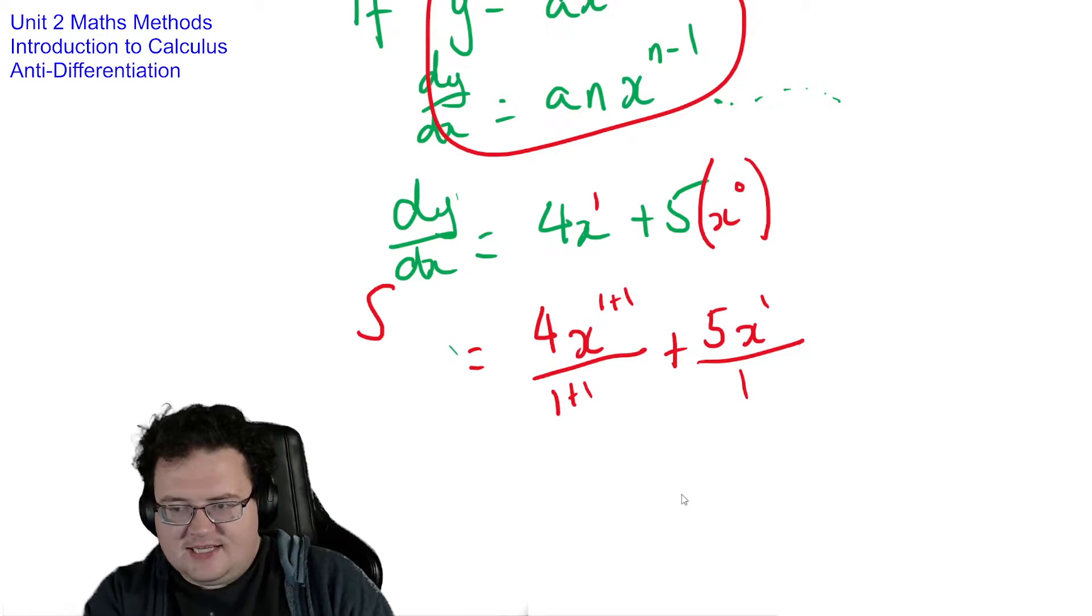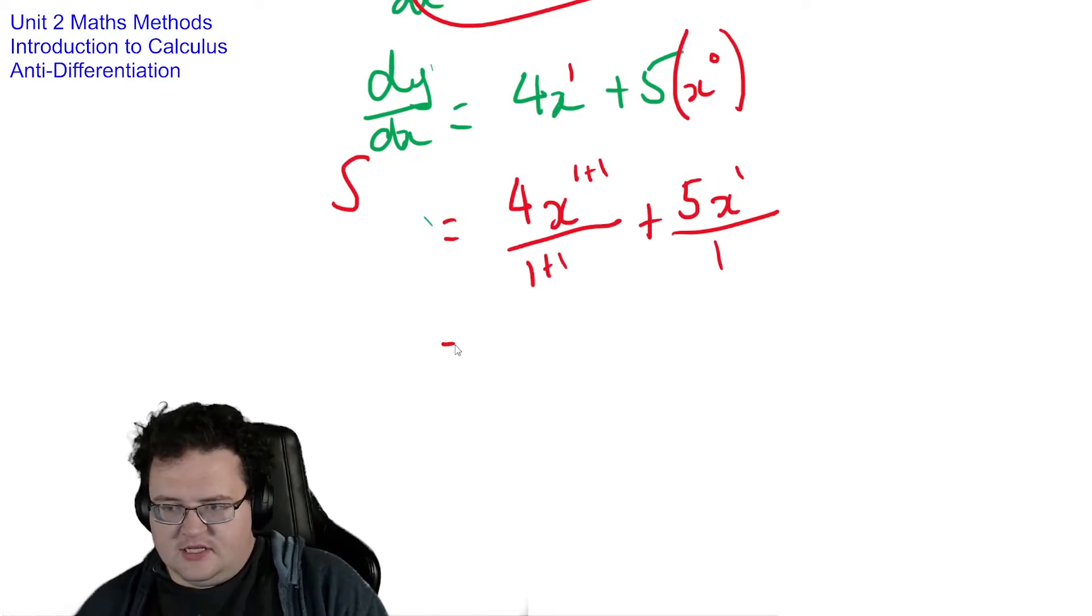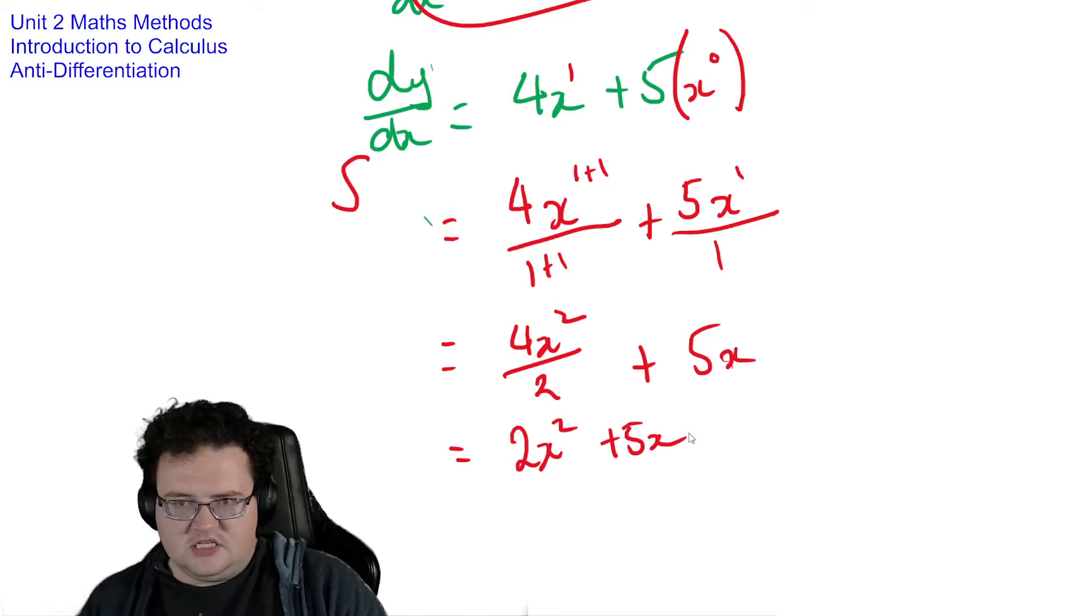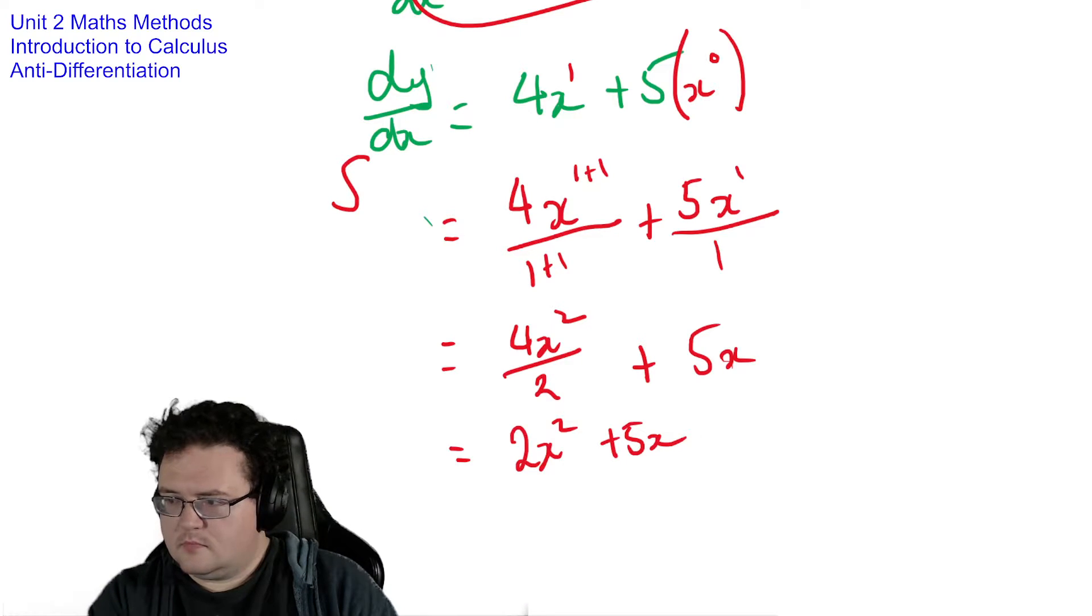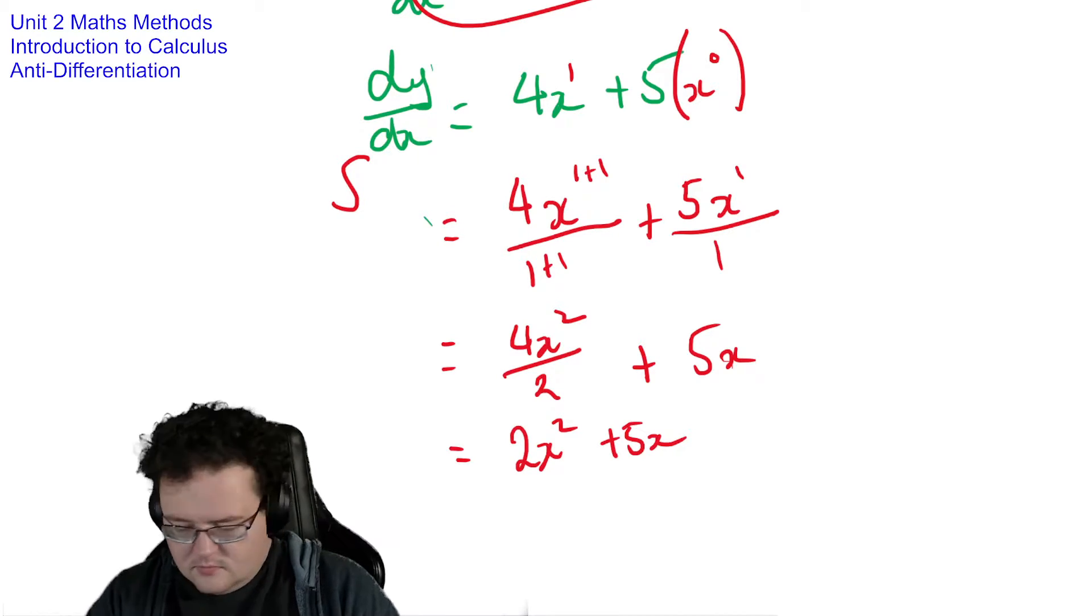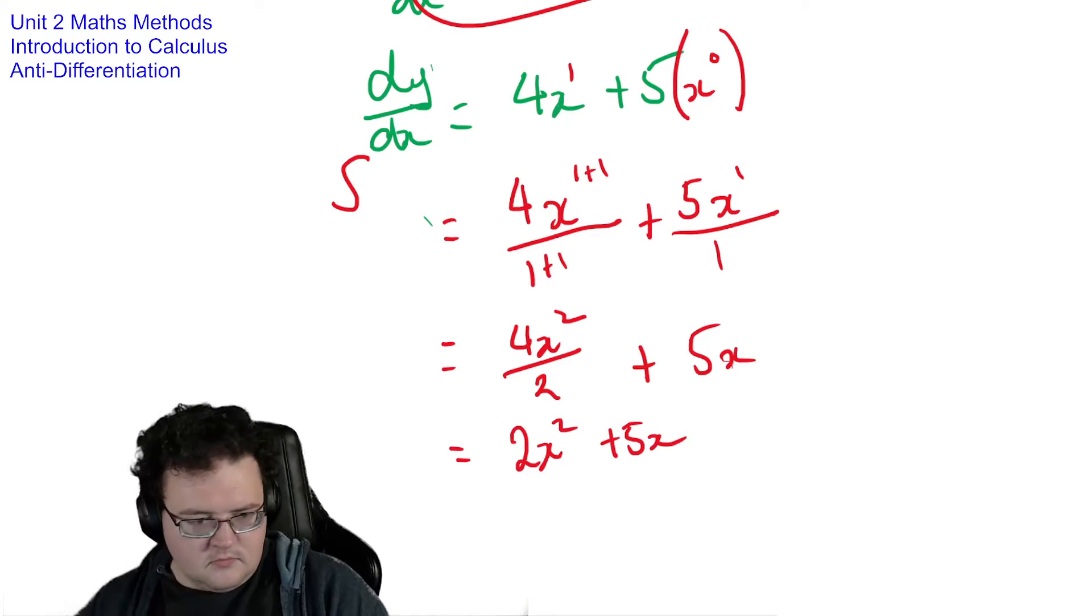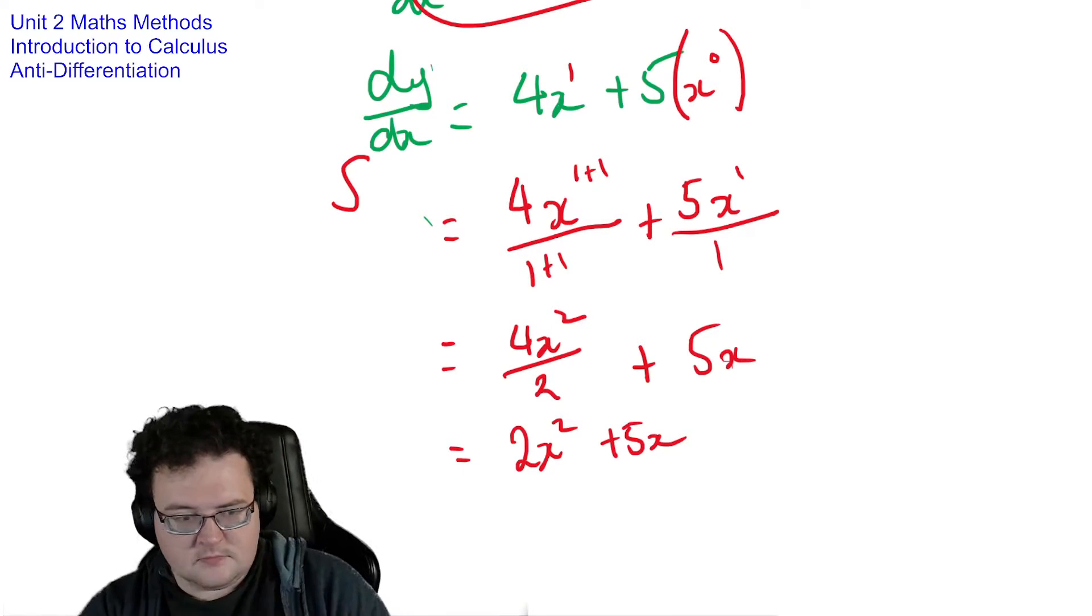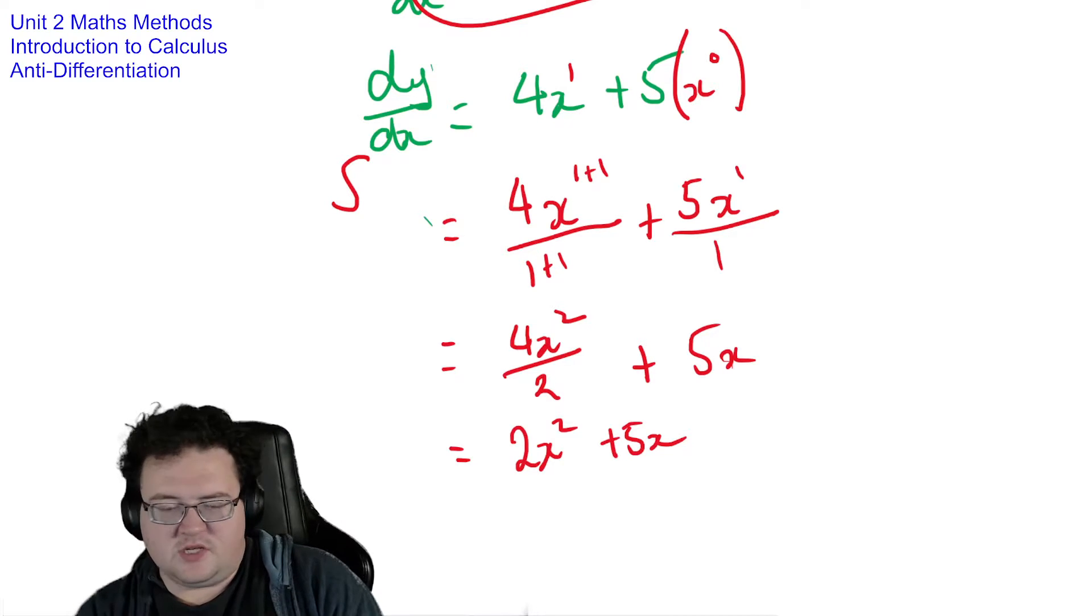And what I create is 4x squared divided by 2 plus 5x to the 1 is just x divided by 1 is just that. So we just leave it like that. So what's 4 over 2? Well, that's 2. So I create 2x squared plus 5x. That's 2x squared plus 5x.